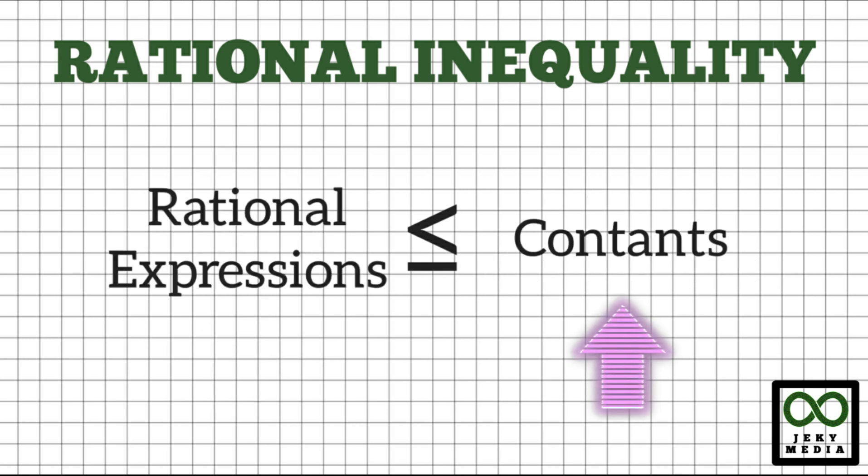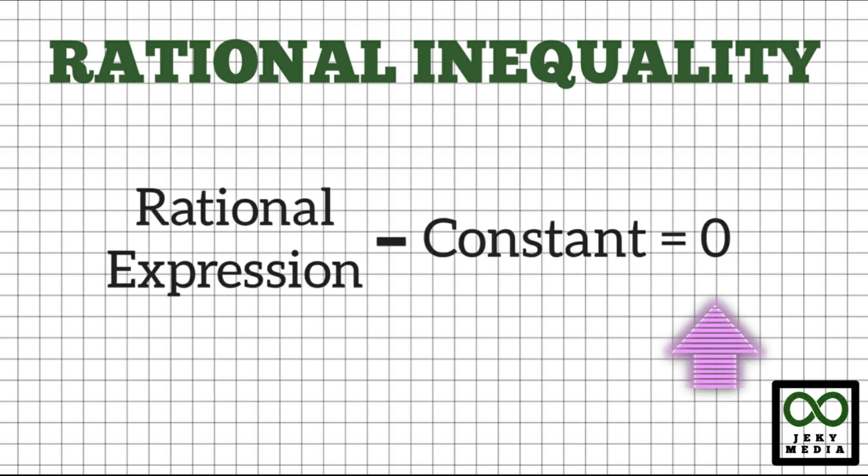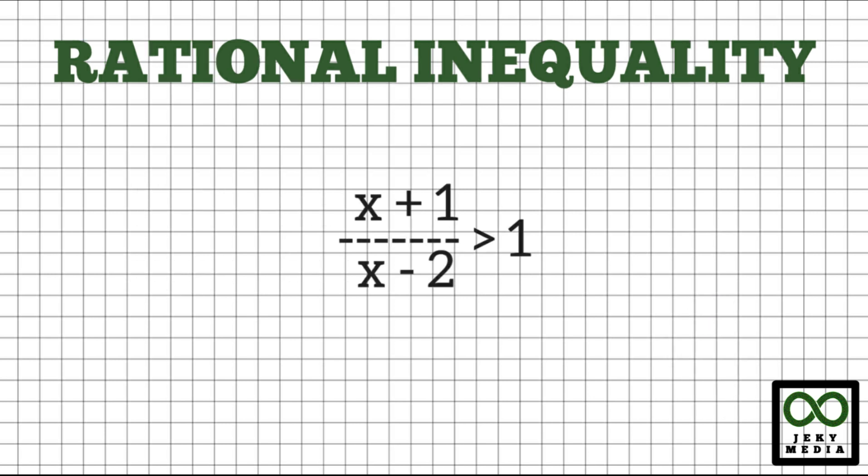Rational inequality can be solved by setting 0 on one side of the equation. For example, rational inequality x plus 1 over x minus 2 greater than 1. Also, 2 over x minus 3 lesser than or equal to 5.